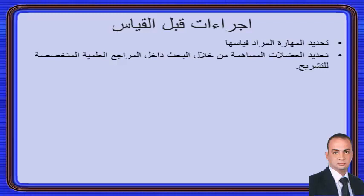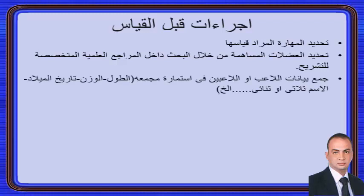عندنا جمع بيانات اللاعب أو اللاعبين في استمارة مجمعة، نكتب فيها الطول والوزن وتاريخ الميلاد والاسم الثنائي أو الثلاثي، والنوع ذكراً أو أنثى وهكذا.